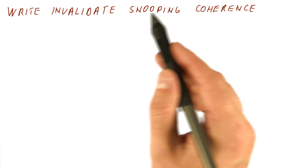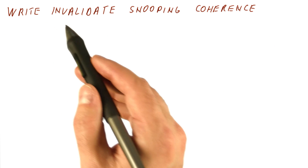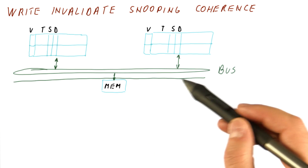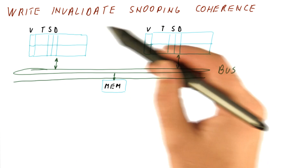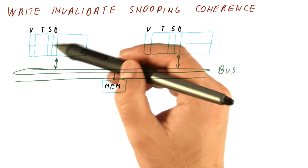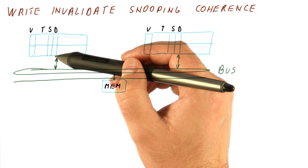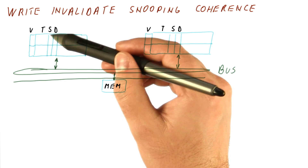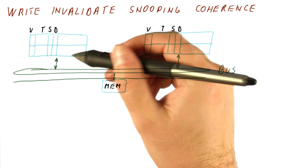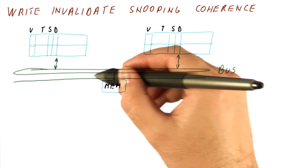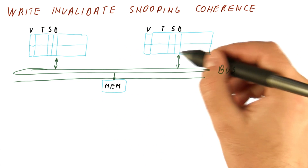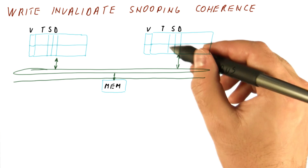There are two types of snooping coherence approaches: write update and write invalidate. Going back to our optimized write update setup, we had the valid and tag bits, also the dirty bit for write-back caches, and a shared bit that tells us whether we are alone. A write invalidate protocol will broadcast writes on the bus so they can be seen by everybody, but instead of updating their copies, they will invalidate them.